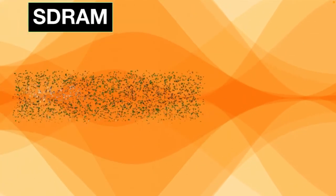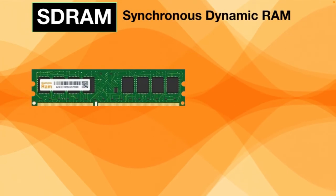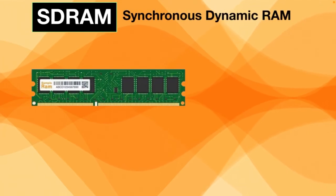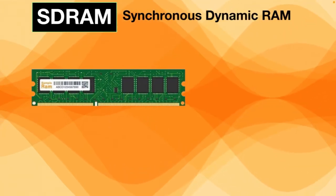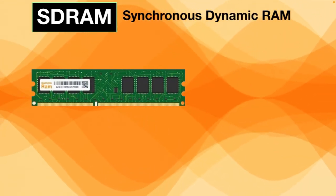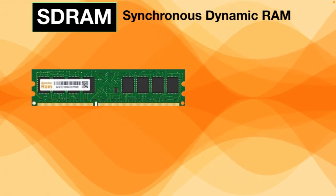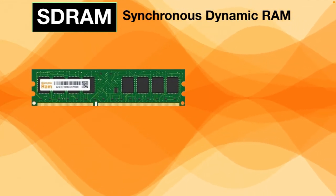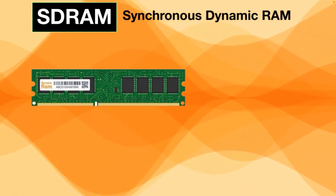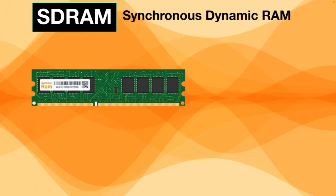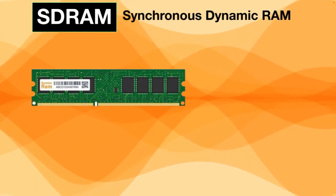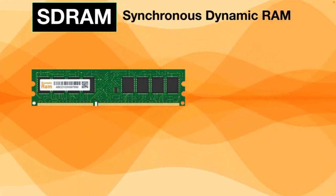Another type of RAM is SDRAM — Synchronous Dynamic RAM — which is a subset of DRAM. SDRAM also has capacitors like DRAM, but the key difference is speed: DRAM runs slower than the system clock.